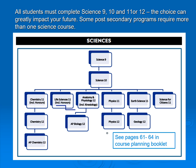All students must complete Science 9, Science 10, and Science 11 or 12. The choice can greatly impact your future. Some post-secondary programs require more than one science course. Please note that Science 10 can lead into Chemistry, Life Sciences, Anatomy & Physiology, Physics 11, Earth Science 11, and Science for Citizens. Those also can lead into AP courses or Grade 12 courses. There is lots more information on pages 61 to 64 in the course planning booklet, or please talk to your science teacher.